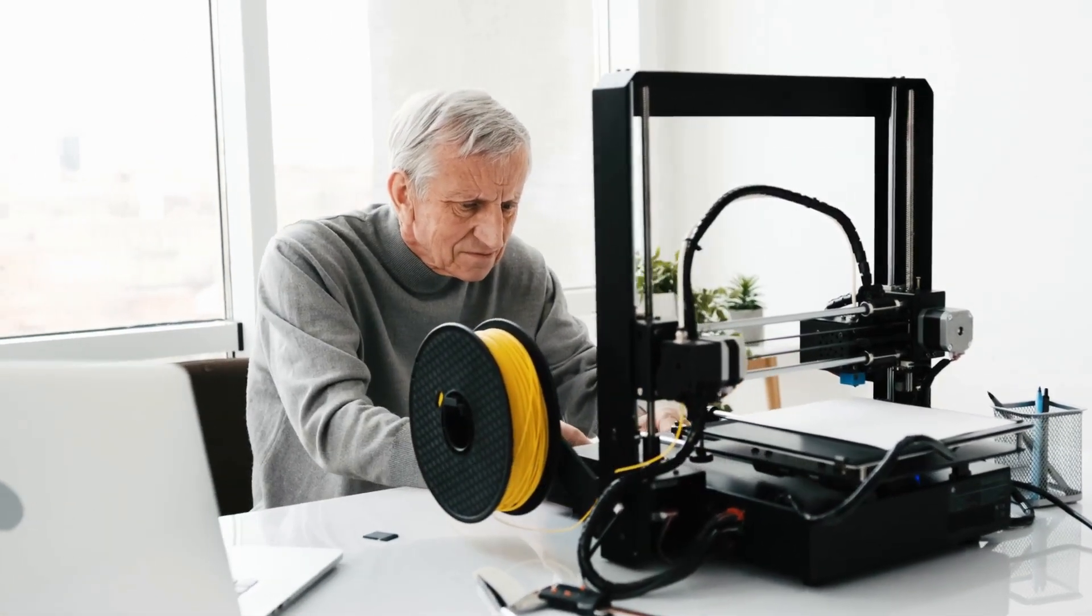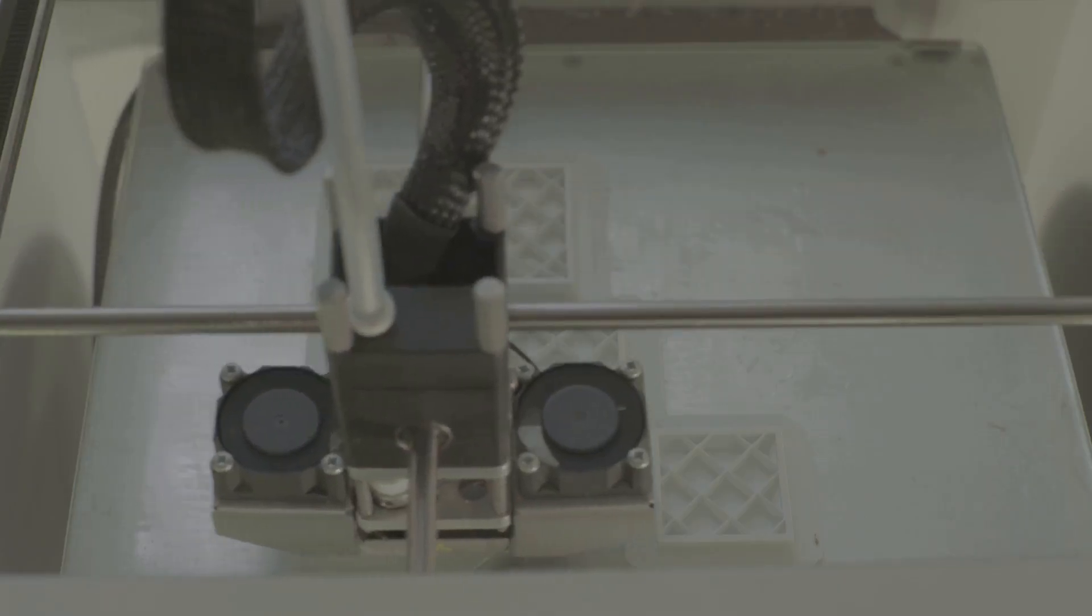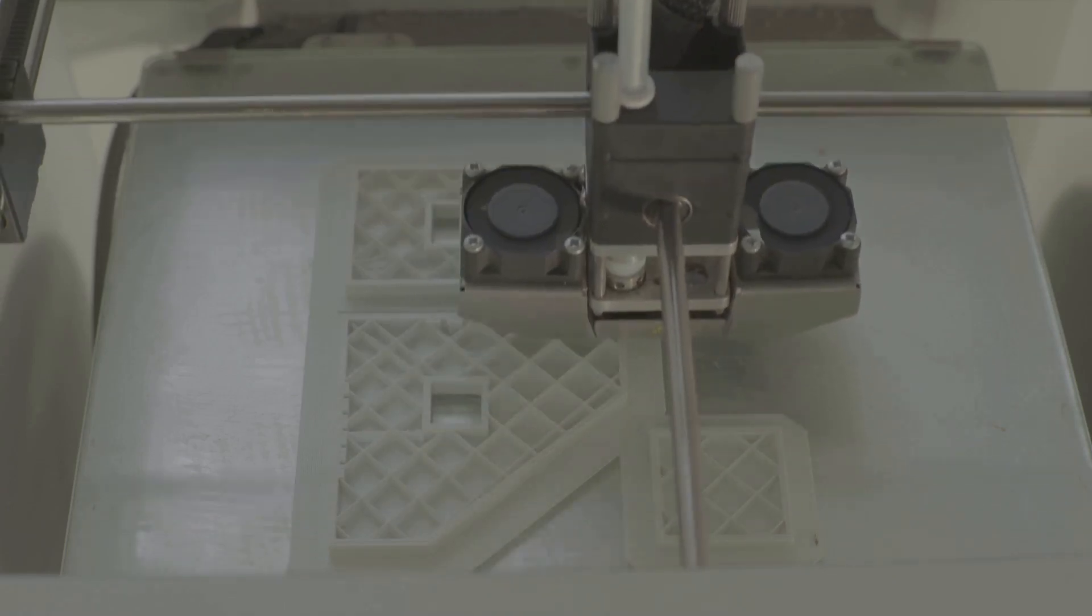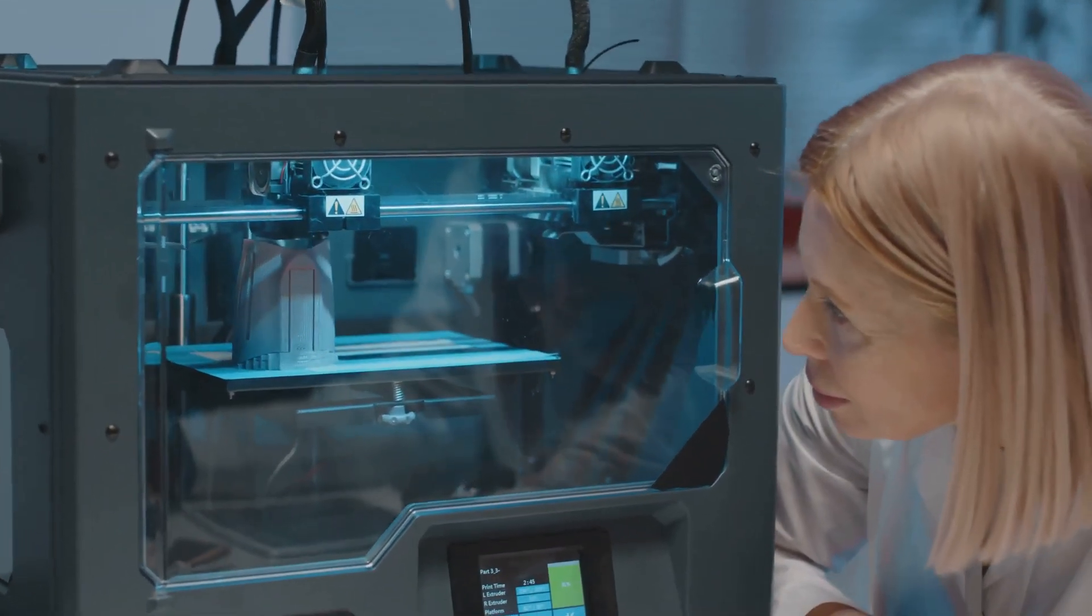In 1983, an ingenious engineer named Chuck Hull, not quite Scotty but close, invented a process called stereolithography. This breakthrough, using lasers to solidify liquid plastic, marked the birth of 3D printing as we know it. It was a far cry from replicators, but it was a start.